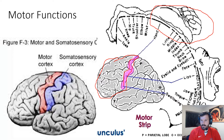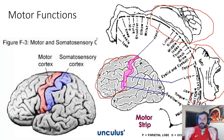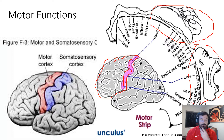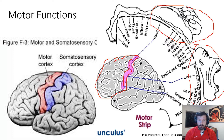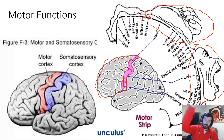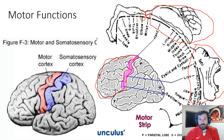In this homunculus, you'll see that the hand is really big and the mouth is also really big. That means there are a lot of neural connections in those areas, giving us a lot of maneuverability. Your elbow and wrist are drawn very small, reflecting that there are very few things you can do with them.